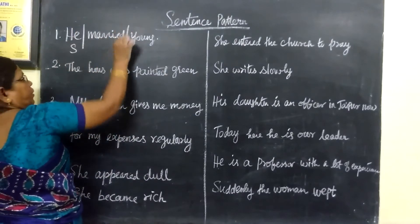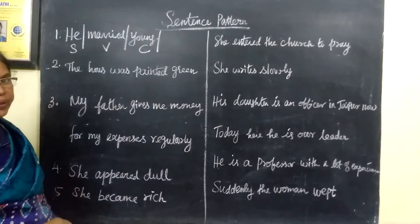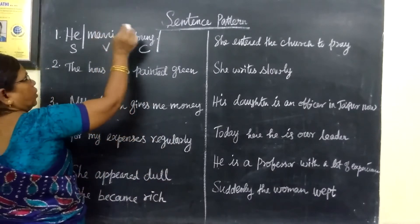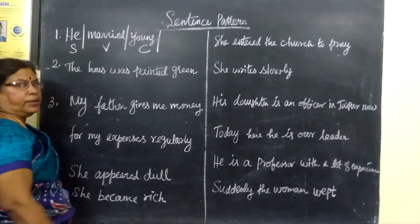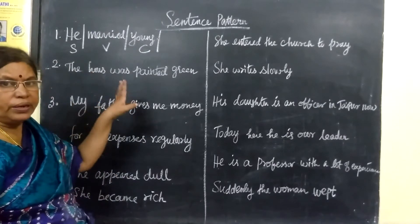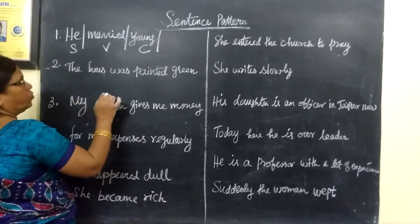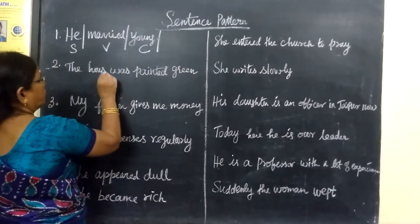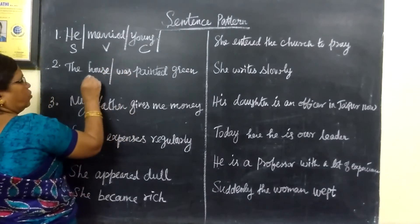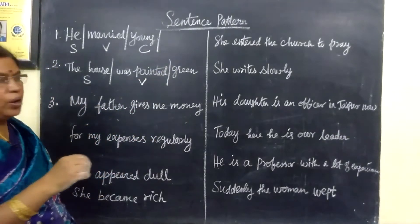In 'He married young' — 'he' is the subject, 'married' is the verb, and 'young' is the complement. I told you that if it's a complement, the sentence will be fulfilled. Next: 'The house was painted green.' Here, 'the house' is the subject, 'was painted' is the verb, and 'green' refers to a complement.